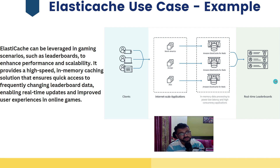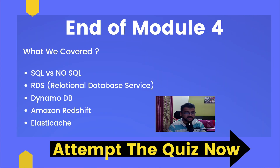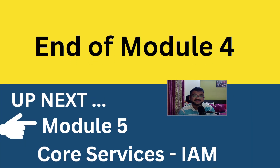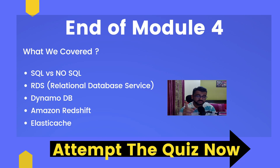In gaming, the last thing you need is lag — you can't afford slow performance — making in-memory a very strong candidate. This brings us to the end of Module 4, where we covered SQL vs NoSQL, relational databases, DynamoDB, data warehouses, Redshift, and ElastiCache. In Module 5, we'll cover Identity and Access Management — how to create users, manage access and security. Don't forget to attempt the quiz before moving on. See you in Module 5!